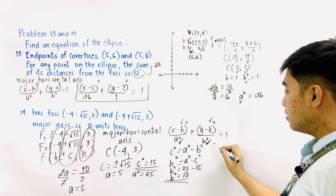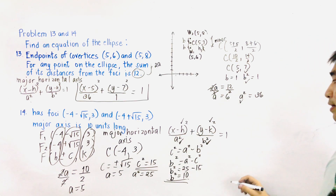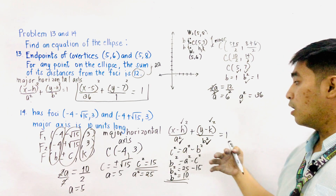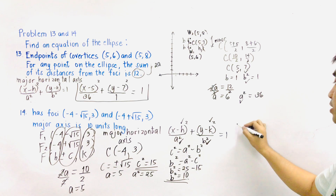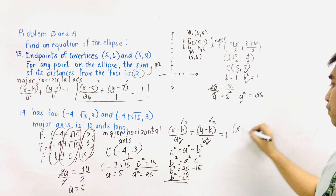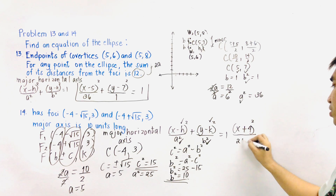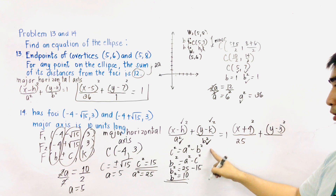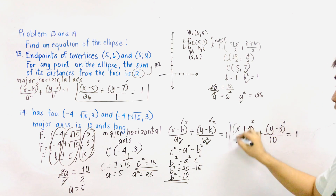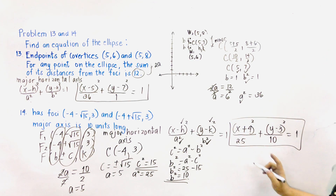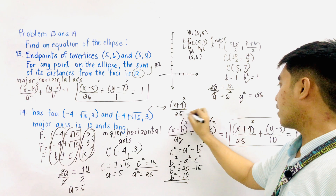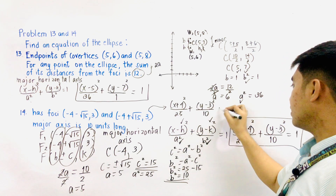We are now ready to substitute into the equation. The center h = −4 gives us (x + 4), and k = 3 gives us (y − 3). So the equation becomes: (x + 4)²/25 + (y − 3)²/10 = 1. This is the answer to problem number 14. The answer is (x + 4)²/25 + (y − 3)²/10 = 1, which satisfies the given conditions.